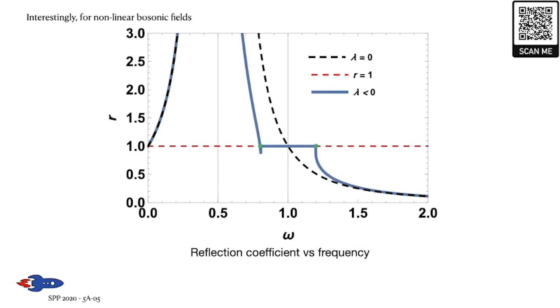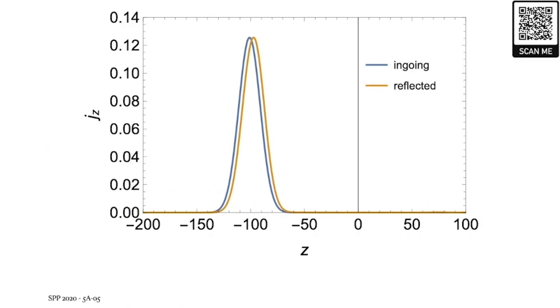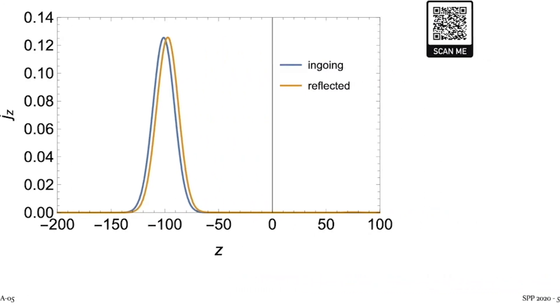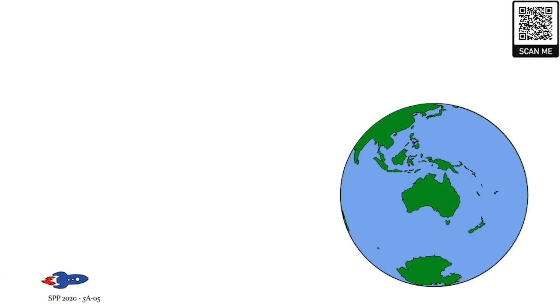In this plot, we again see modes of superradiance and non-superradiance. But we see a regime where we get perfect reflectance. Performing another time domain analysis, we can clearly see that the amplitude of the reflected wave is equal to the amplitude of the initial wave after hitting the potential.